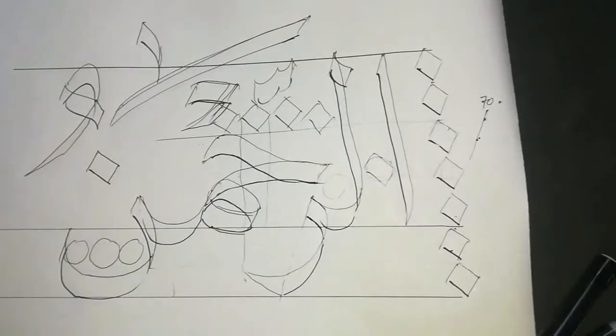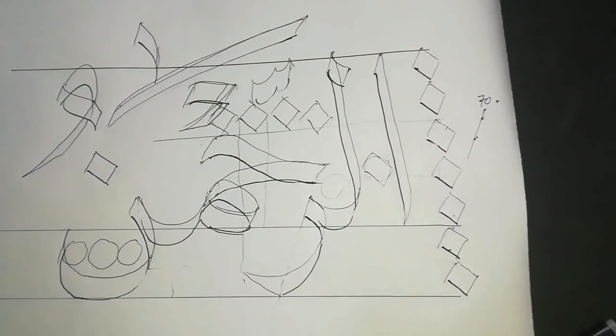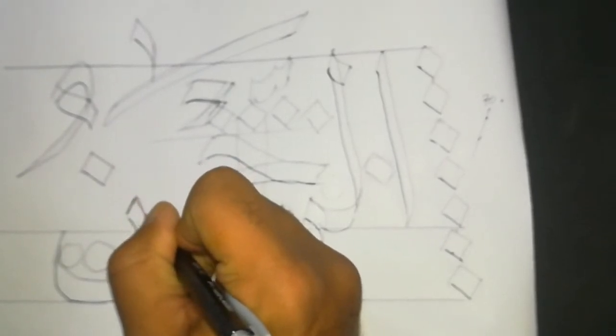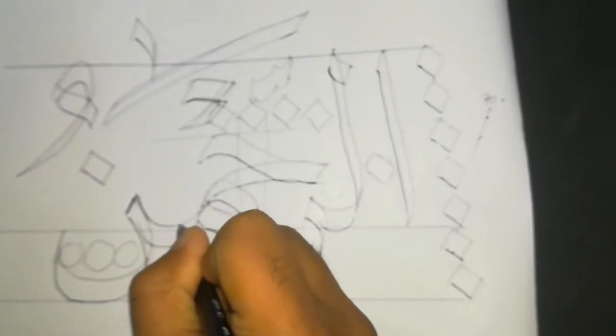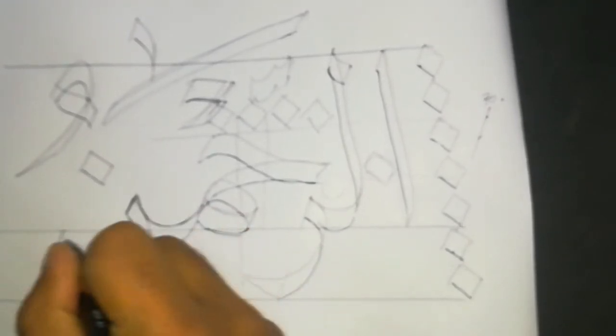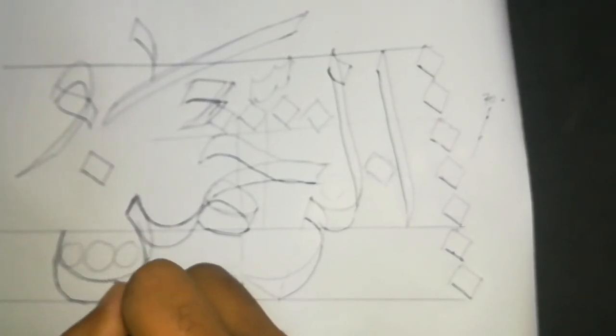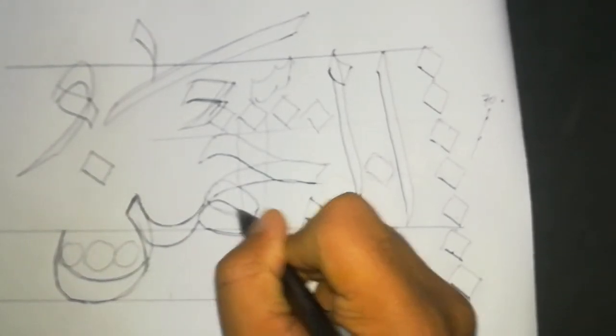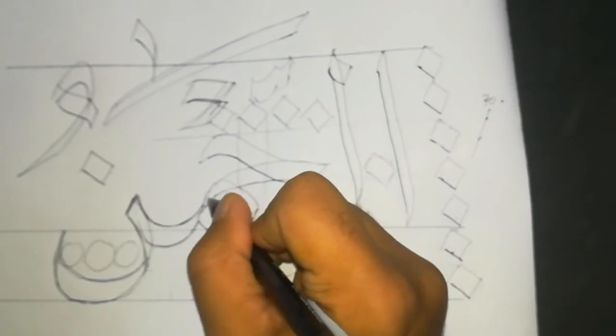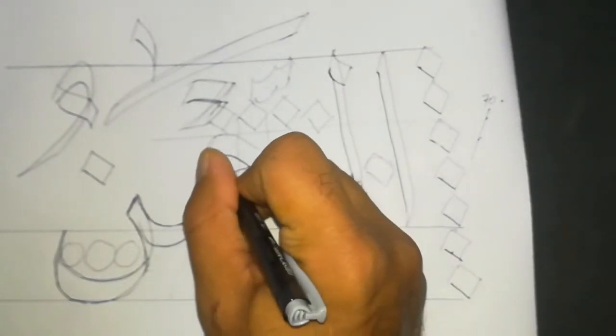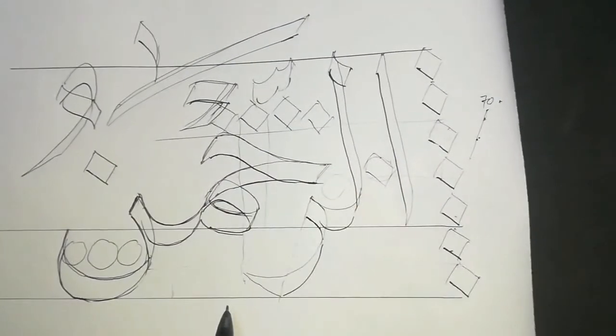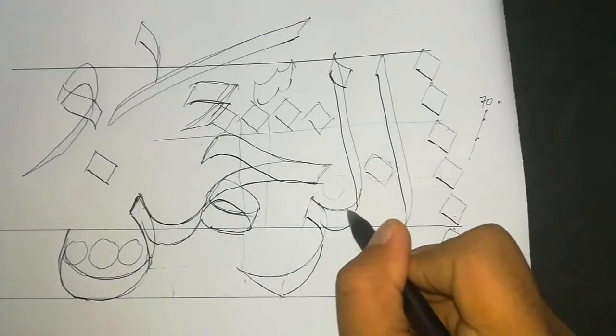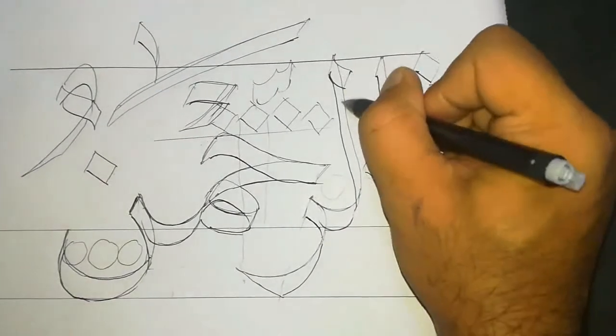Join all the dots, and then you can again color it in. Or once you make these lines, you can just go around all the lines like this. Make it a little bit dark.